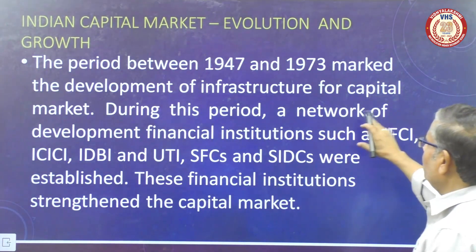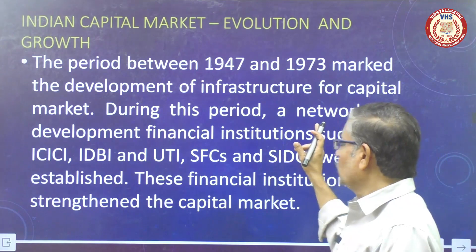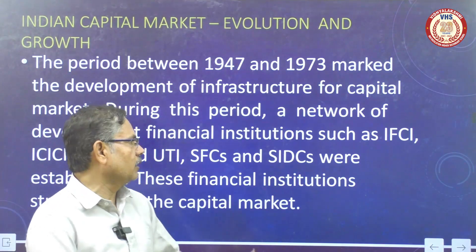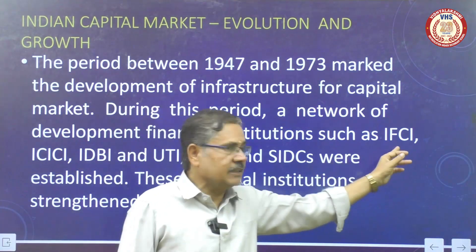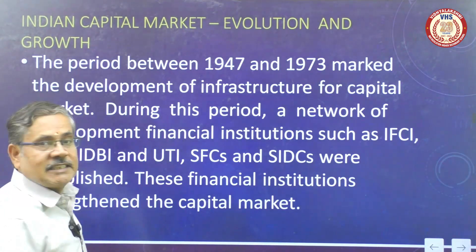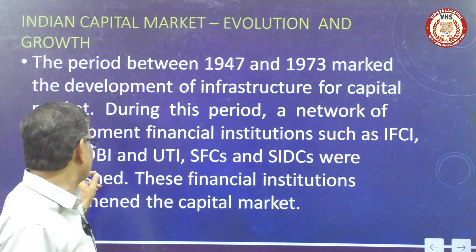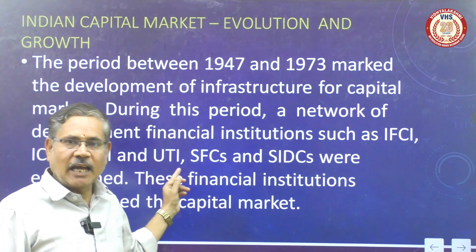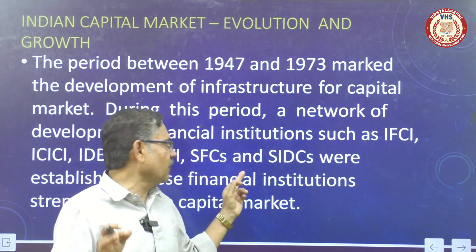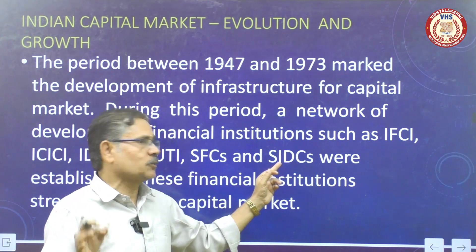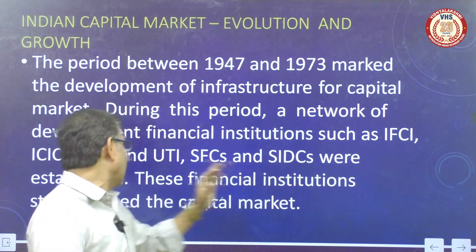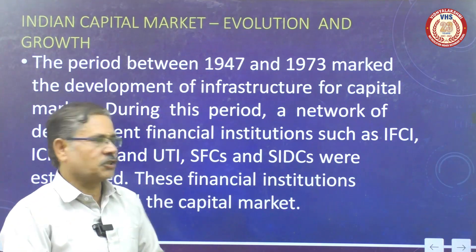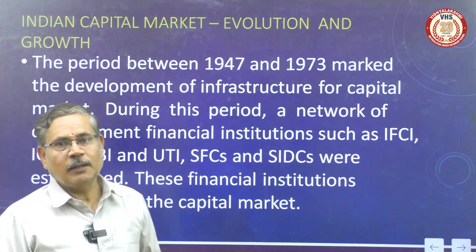The first period is between 1947 to 1973. During this period, a network of development institutions was established: IFCI — Industrial Financial Corporation of India; ICICI — Industrial Credit Investment Corporation of India; IDBI — Industrial Development Bank of India; UTI — Unit Trust of India; SFC — State Finance Corporation; and SIDCO — Small Industries Development Corporations. These financial institutions provided long-term shares and debentures in the capital market.